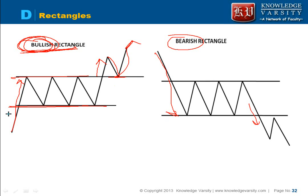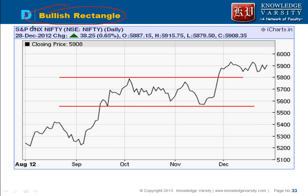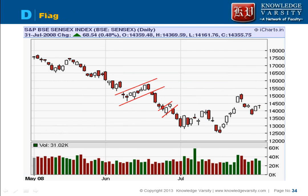Bullish and bearish rectangles are continuation patterns — they continue the trend. As an example, I observed a bullish rectangle pattern in Nifty. The stock price was increasing, then formed a rectangle going up and down, and then broke out upward. Within it, you can also observe triangles. The greater scheme is the price comes here, goes up and down, but finally breaches and reaches higher prices.